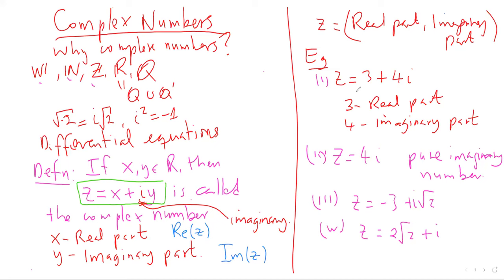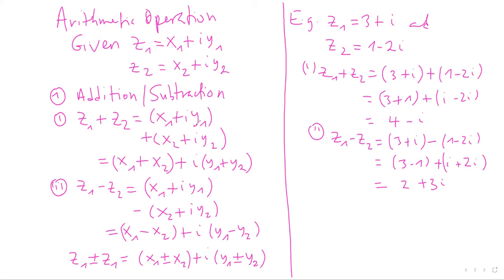For example, if z = 3 + 4i, then 3 is the real part and 4 is the imaginary part. If z = 4i, we say it is a pure imaginary number because the real part is not there. Other examples include z = −3 + i√2 and z = 2√2 + i. These are all examples of complex numbers.